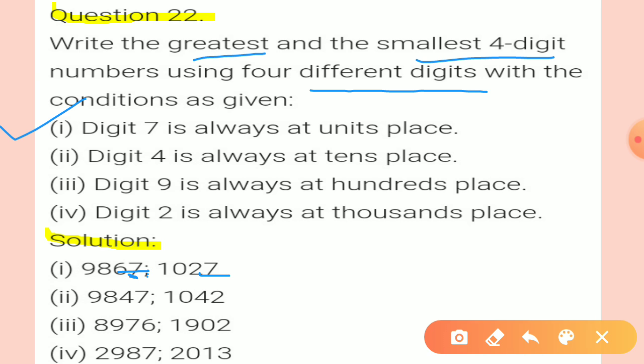For the smallest number with 7 fixed at unit place: 1, 0, 2, 7. Condition 2: digit 4 is always at the 10th place. Fix 4 on the 10th place. Greatest number: 9 first, then 8, then 4 is fixed at tens place, then 7 at units — giving 9, 8, 4, 7. Smallest number: 1 at thousands, 0 at hundreds, 4 fixed at tens, then 2 at units — giving 1, 0, 4, 2.